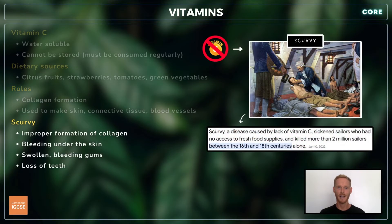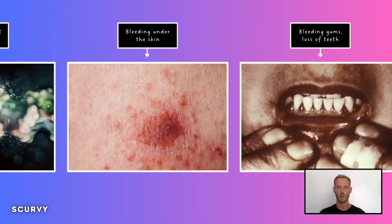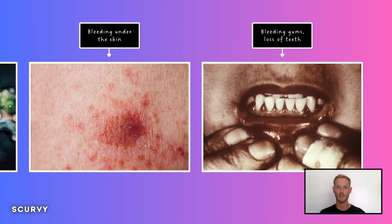A sustained lack of vitamin C in the diet can lead to scurvy, a disease that famously afflicted sailors of the past who had no access to fresh food at sea. Scurvy is characterized by the improper formation of collagen, which causes bleeding under the skin, swollen bleeding gums, and even the loss of teeth.